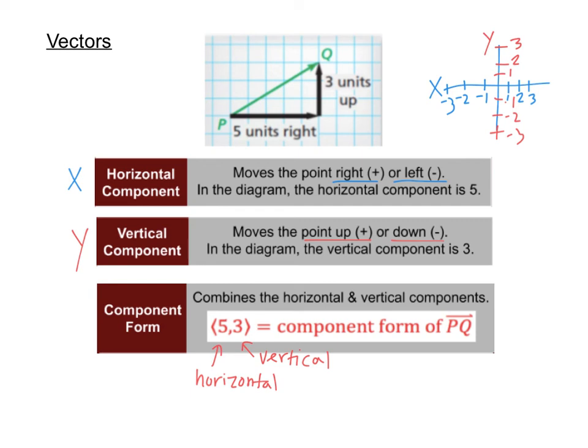So let's say that my vector was negative four, negative two. Well, now the negative four, my horizontal component is negative. That tells me that I'm going to move left four. And negative two in the vertical direction is down. So that vector would take me left four and down two.